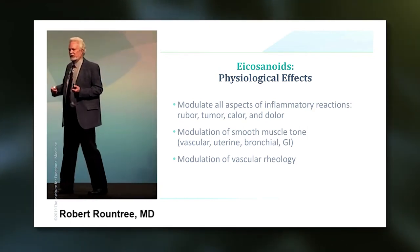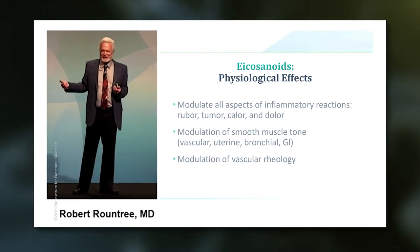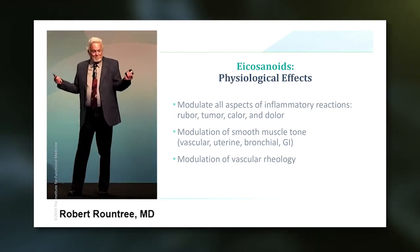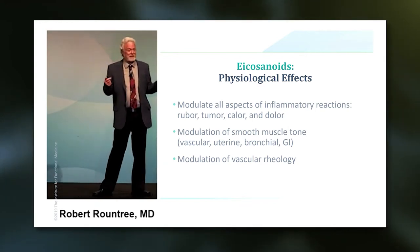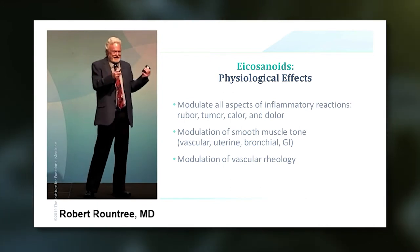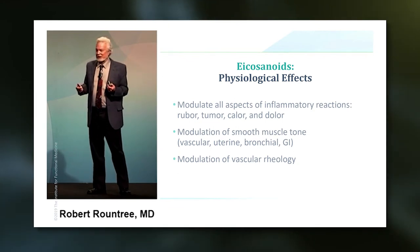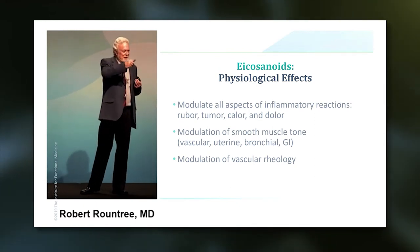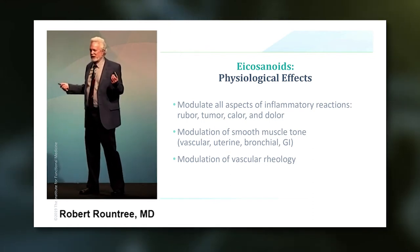These eicosanoids are involved in tumor, rubor, dolor, and calor — all aspects of the inflammatory reaction are mediated by these chemicals. These chemicals were first discovered by trying to understand the physiology of menstrual cramps. They were first found in the prostate, so they were called prostaglandins. But immediately, people recognized this is what was causing menstrual cramps. And that's one of the first uses for non-steroidal anti-inflammatory drugs — we can block these chemicals and stop menstrual cramps. Long before using NSAIDs for arthritis, it was all about menstrual cramps, because these things modulate smooth muscle tone.